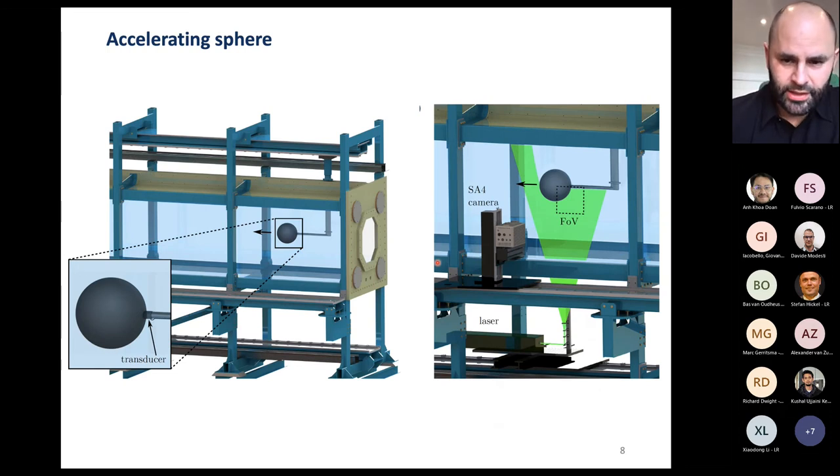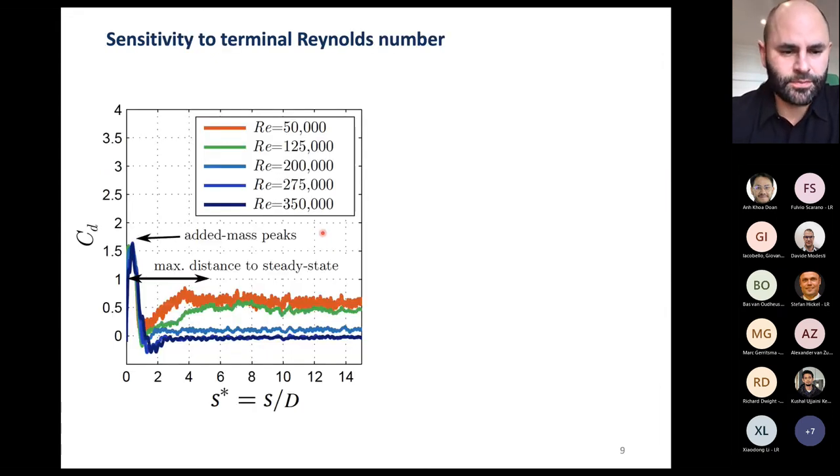Anyway, so I'll get into this towing tank facility of ours in a minute, but essentially, we took the sphere in a tank of water and measured the forces as we accelerated from rest and as we accelerated from a terminal velocity to another terminal velocity. And long or the short, without getting into the details, is that when you plot the drag coefficient, instantaneous drag coefficient as a function of the distance traveled, so the S star is the displacement of the body normalized by its diameter, you get, as we know very well, an initial, what we would call an added mass spike from the ball's response during acceleration.